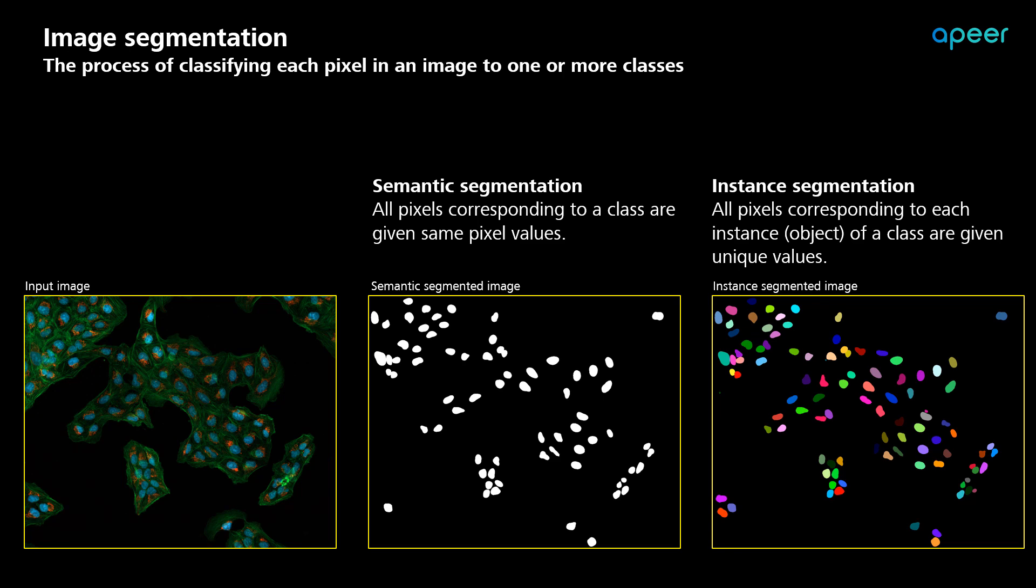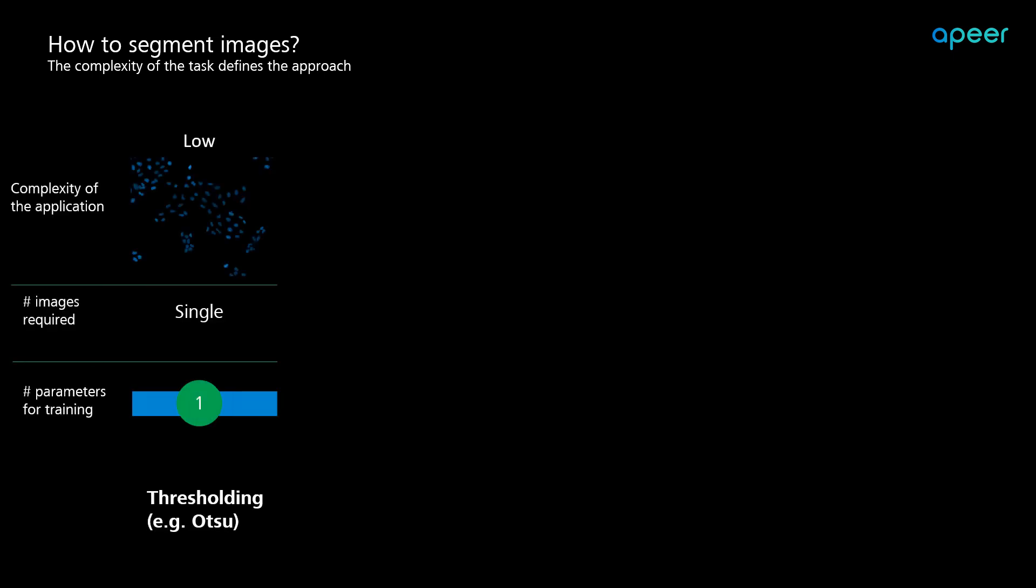The exact approach you take for segmentation completely depends upon the complexity of your image. In this example, the nuclei can be easily separated from the background by applying a simple histogram-based thresholding. OTSU can be used to find that appropriate threshold value to separate the nuclei from the background.